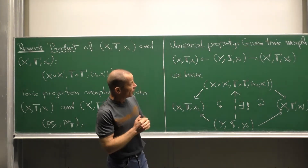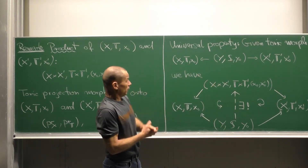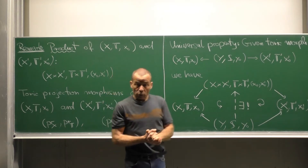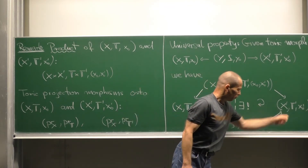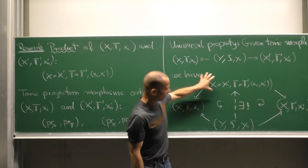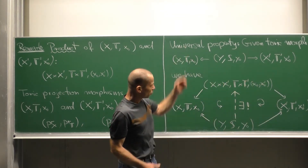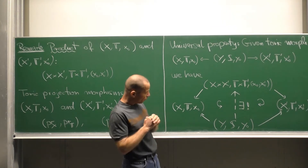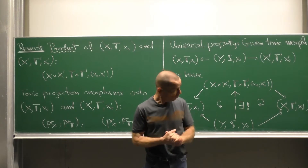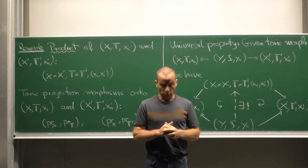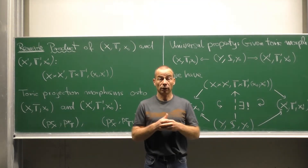This product satisfies a universal property. Namely, given any two toric morphisms from a toric variety Y, S, Y₀ into our factors, we obtain a commutative diagram. The universal property is that in this situation we have a unique morphism — which is a toric morphism — making this diagram commutative. So this toric product is a product in a categorical sense.